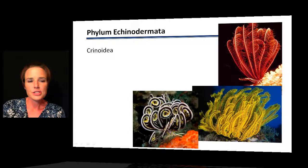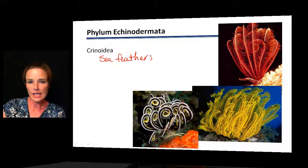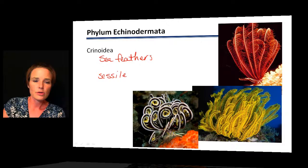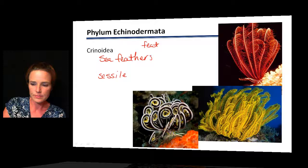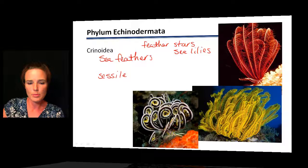The Crinoidea are what we call sea feathers — also known as feather stars or sea lilies. This is a group many students are not familiar with at all. At first glance, these probably look like plants. They are sessile, attached to a substrate, and you can see their attachment points in the pictures. They are attached to some type of substrate.